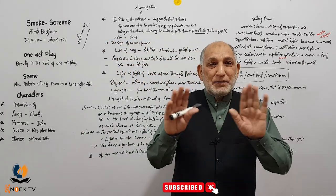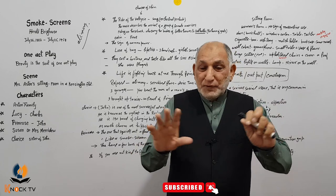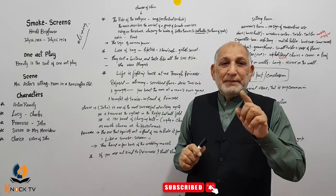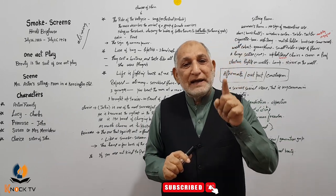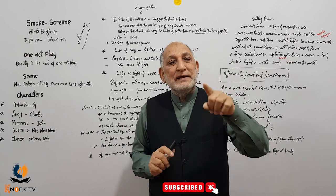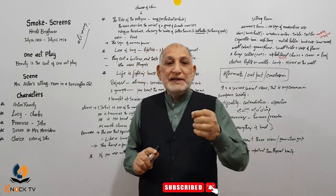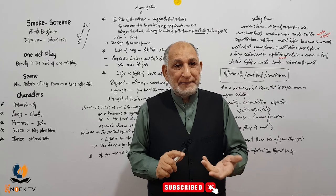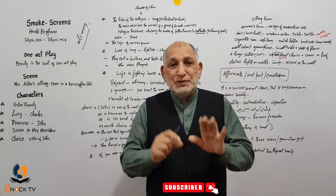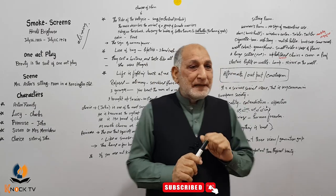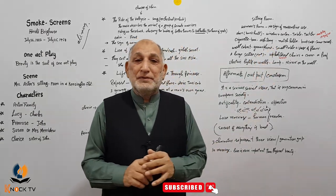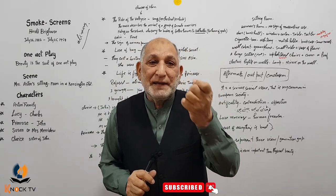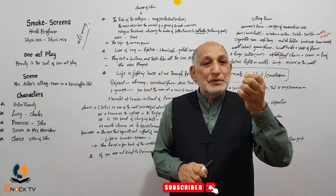جب پردہ اٹھتا ہے تو ہمیں Susan نظر آتی ہے — گاؤں سے آئی 50 سال کی خاتون۔ وہ gramophone پر music چلاتی ہے۔ پہلا musical piece جو آتا ہے وہ orchestral prelude ہے۔ یہ Valkyries کا گیت ہے — Norse mythology میں Valkyries وہ young maiden ہیں جو جنگ میں شہید ہونے والوں کی لاشیں اٹھا کر Valhalla لے جاتی ہیں۔ یہ مذہبی گیت ہے جس سے Susan کی religious mentality کا اندازہ ہوتا ہے۔